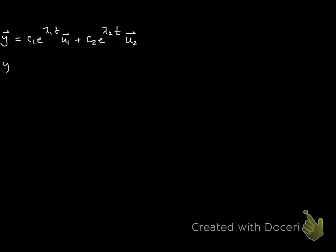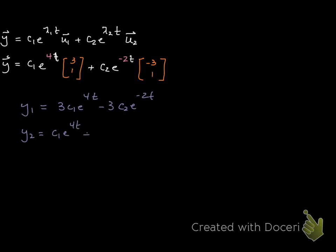What we have then is y = c₁e^(4t)[3; 1] + c₂e^(-2t)[-3; 1]. We often split these apart and write them equation by equation. y₁ = 3c₁e^(4t) - 3c₂e^(-2t), and then y₂ we have right here.